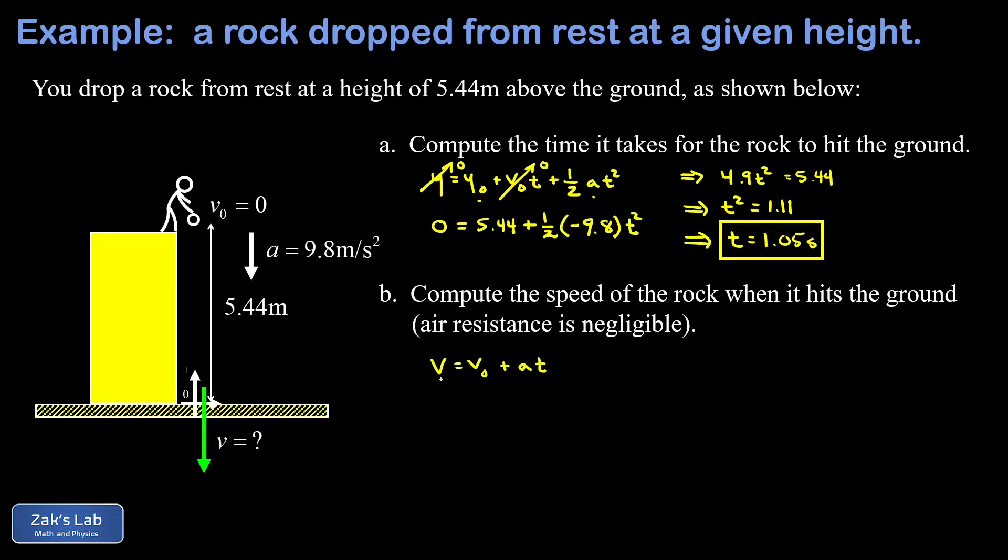And the final velocity there is what we're trying to solve for. Note that in the question, we were asked for the speed. So at the end, we'll have to find the magnitude of that velocity. So we want to solve for that final velocity v. We know our initial velocity was zero. We know the acceleration induced by gravity. And we know how long this rock takes to hit the ground.